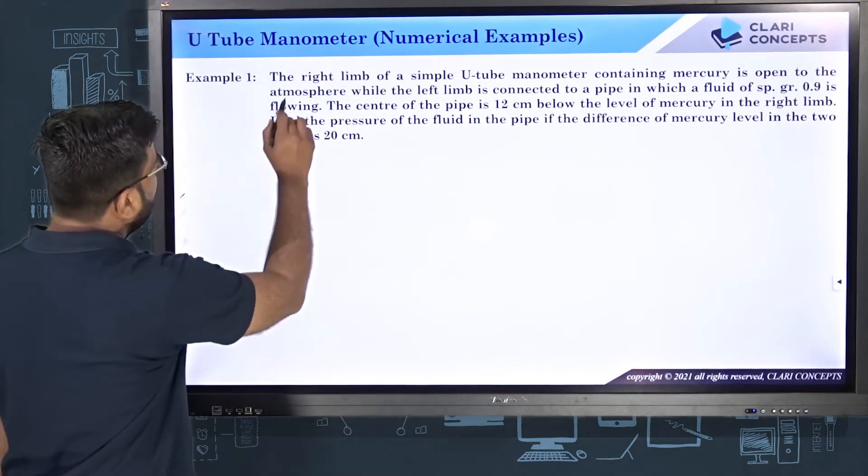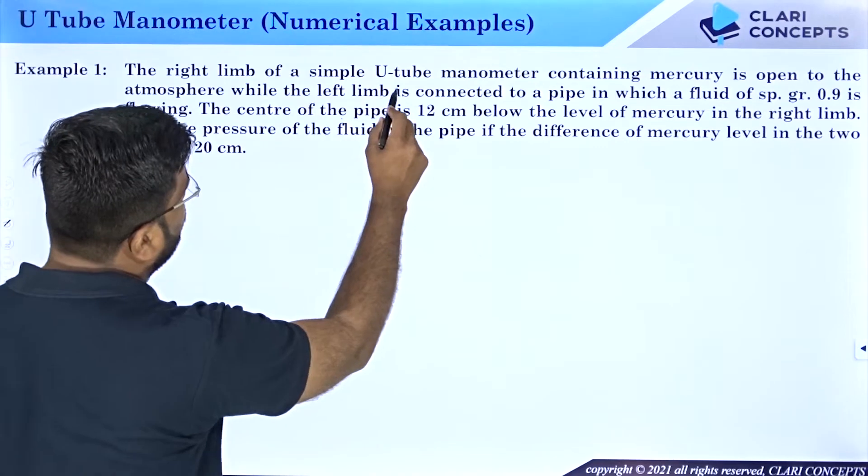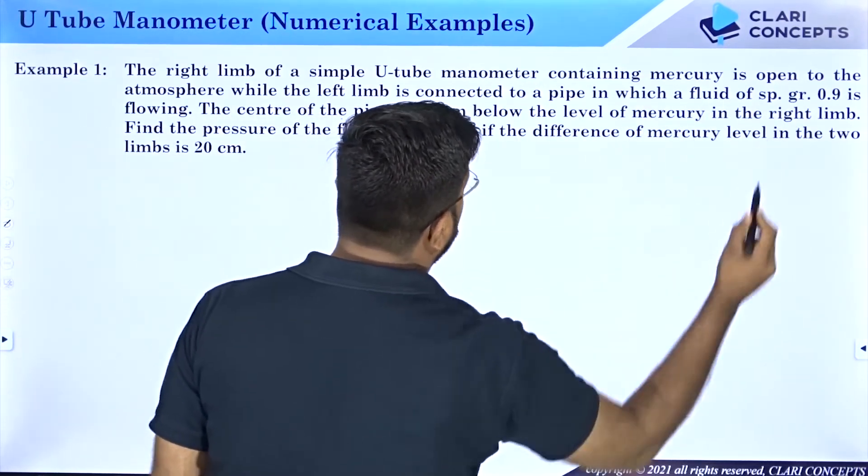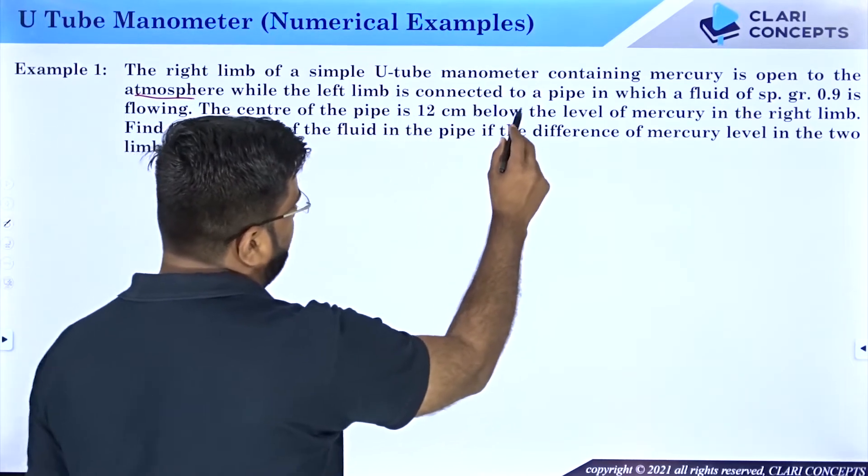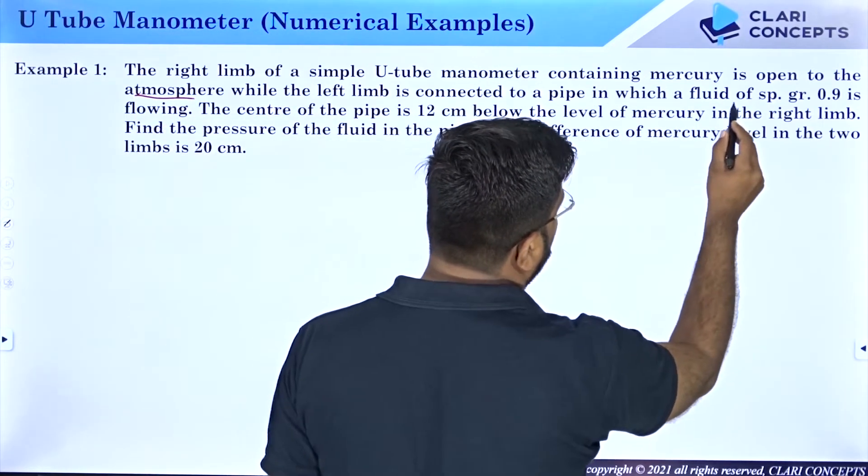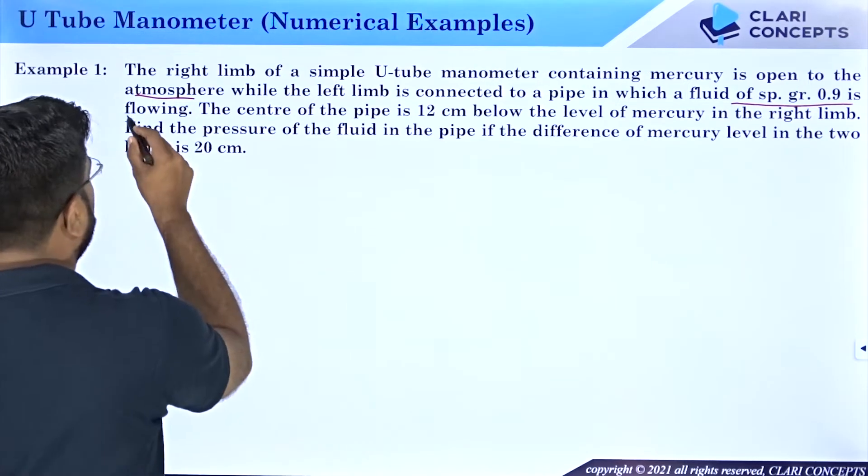Okay. Example number 1: The right limb of a simple U-tube manometer containing mercury is open to the atmosphere while the left limb is connected to the pipe in which a fluid of specific gravity 0.9 is flowing.